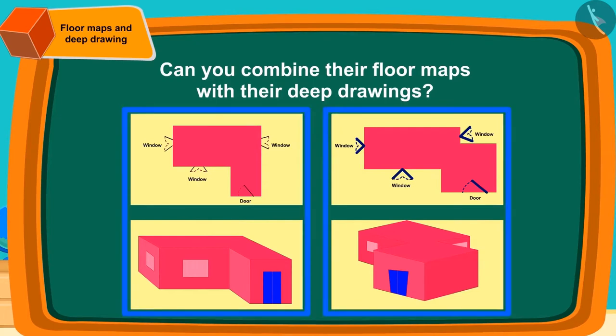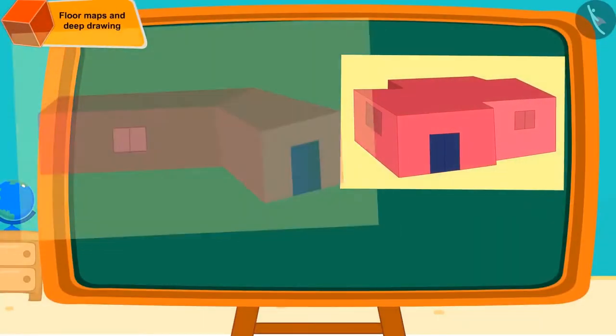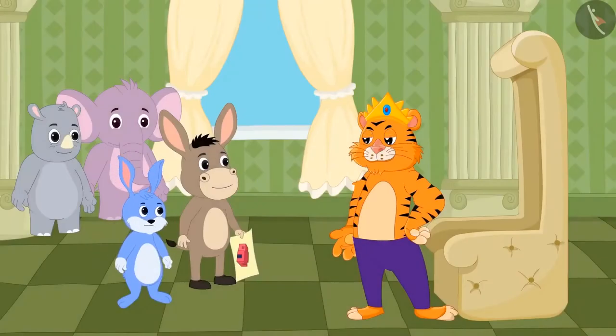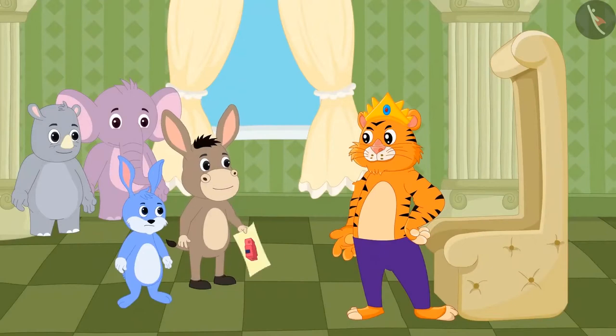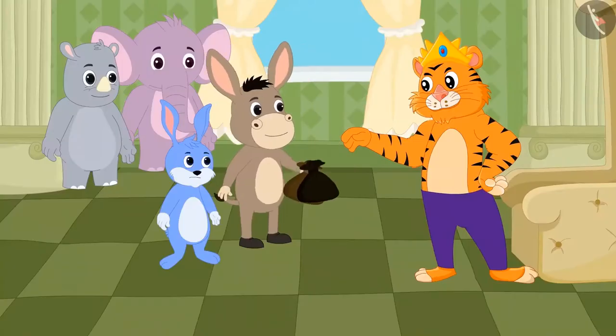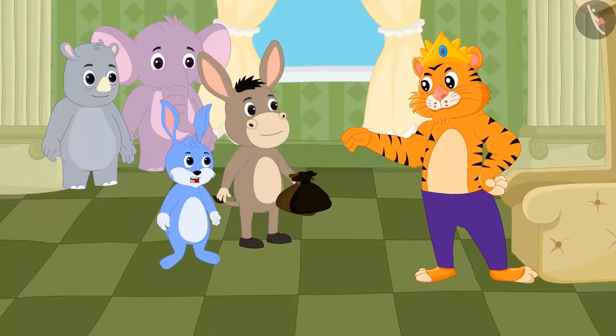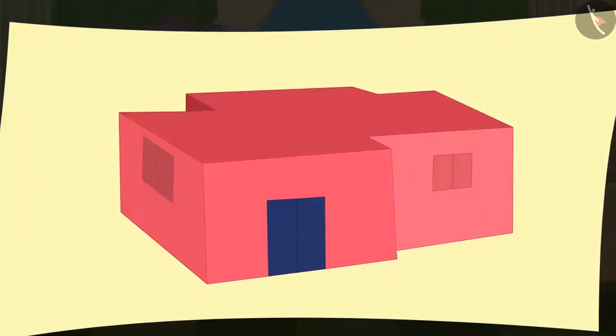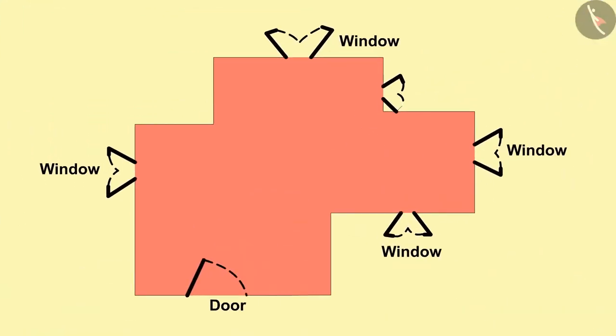The king saw many more designs, but out of all, he liked Bholla's design the best. At last, the king rewarded Bholla. Bholla immediately gave half of it to Bunny, because he made that deep drawing by looking at the map of the floor made by Bunny.